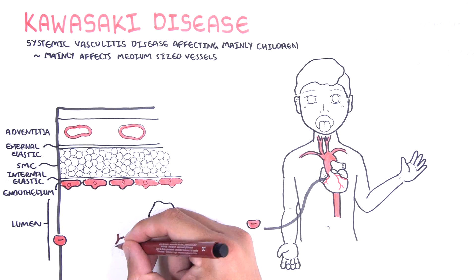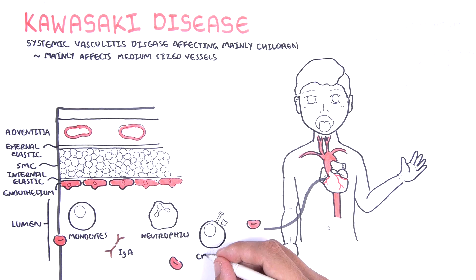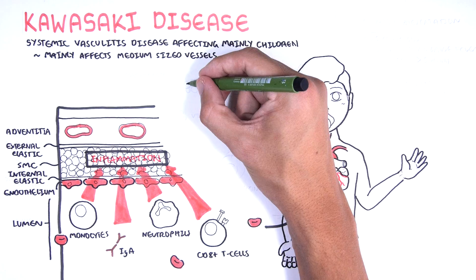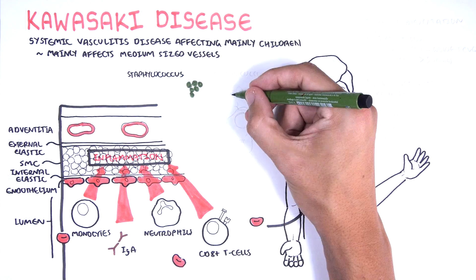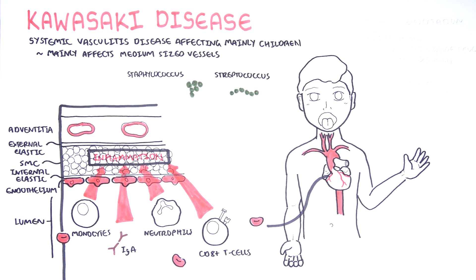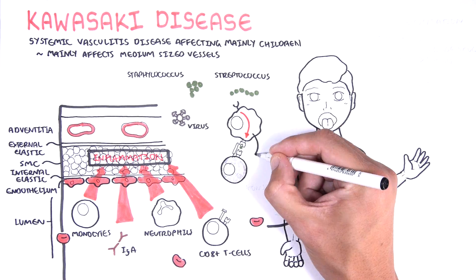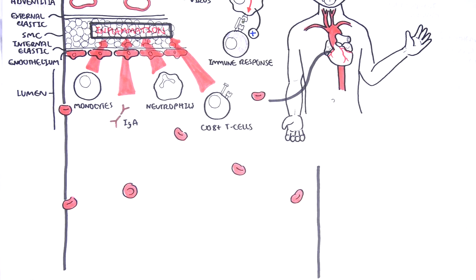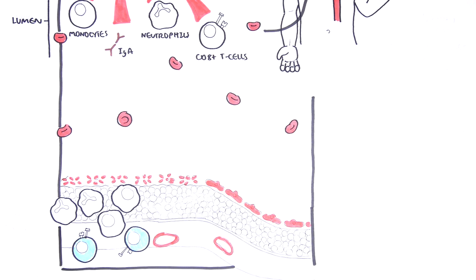The pathophysiology of Kawasaki involves monocytes, IgA antibodies, neutrophils in the acute setting, and cytotoxic T cells, all playing a role in inflammation of medium-sized vessels. What is thought to drive this vasculitis is an infection — theories include Staphylococcus and Streptococcus species, such as from strep throat, and even viral infections. Antigen-presenting cells pick up these antigens and mount an inflammatory response that misdirects the attack against medium-sized vessels, including the coronary arteries.